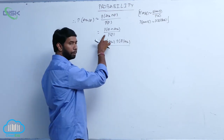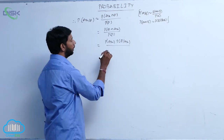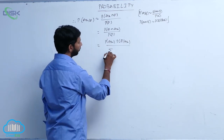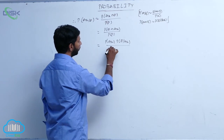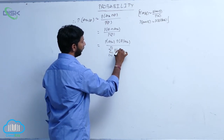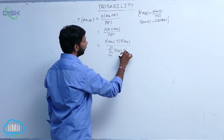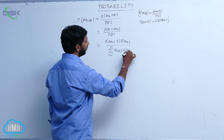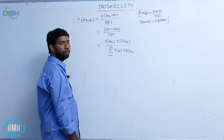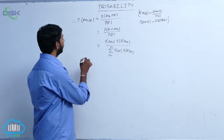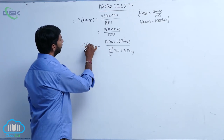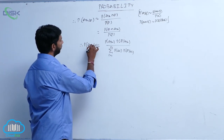From condition 1, P of E is equal to sigma i equals 1 to n, P of A i into P of E given A i. This is the Bayes' theorem for probability.